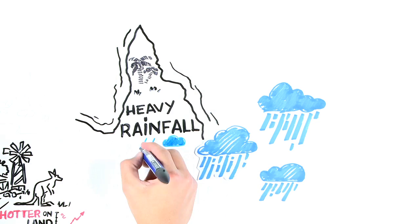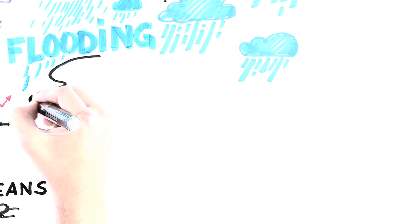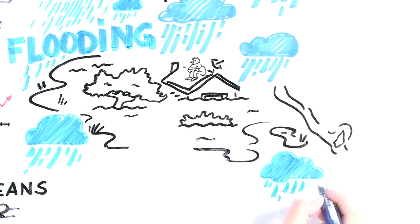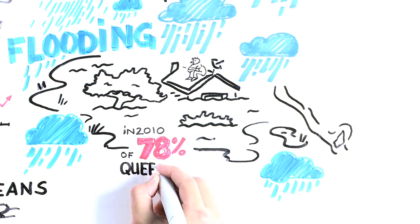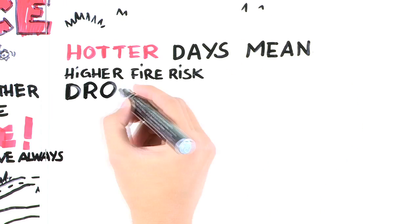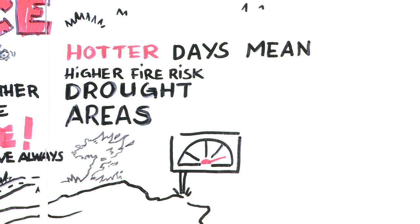Of course, this means more evaporation, more water vapor in the air, and more heavy rainfall. Some places get less, some places get more, but when it rains, it can pour. While all this is going on, let's not forget the heat. Hotter days mean higher fire risk, especially in drought-prone areas.